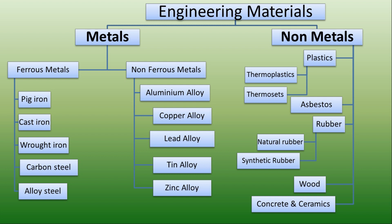Non-metals are all other materials other than metals — all those materials fall under non-metals. They are plastics, asbestos, rubber, wood, concrete, and ceramics. Plastics means polymers. We will discuss the sub-classification in the next slides and cover the in-depth composition and applications of each type in separate videos.